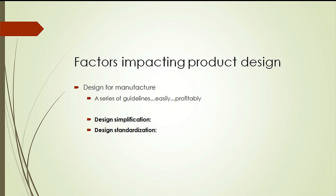Design for manufacture is a series of guidelines that we should follow to produce a product easily and profitably. These guidelines focus on two issues: design simplification and design standardization. Design simplification means reducing the number of parts and features of the product whenever possible — a simpler product is easier to make, costs less, and gives higher quality. Design standardization refers to the use of common and interchangeable parts. By using interchangeable parts, we can make a greater variety of products with less inventory, significantly lower cost, and greater flexibility.